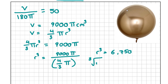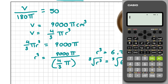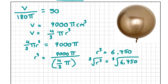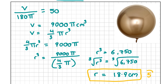The cube root of r³ equals the cube root of 6750 — just like a square root but for cubes, and there's a button on your calculator for this. Press shift, then the square root button, which shows 3 for cube root. The cube root of 6750 is 18.89. Rounding to one decimal place gives 18.9 centimeters. So the radius of Gustav's balloon is 18.9 centimeters, and for this answer you get 5 marks.